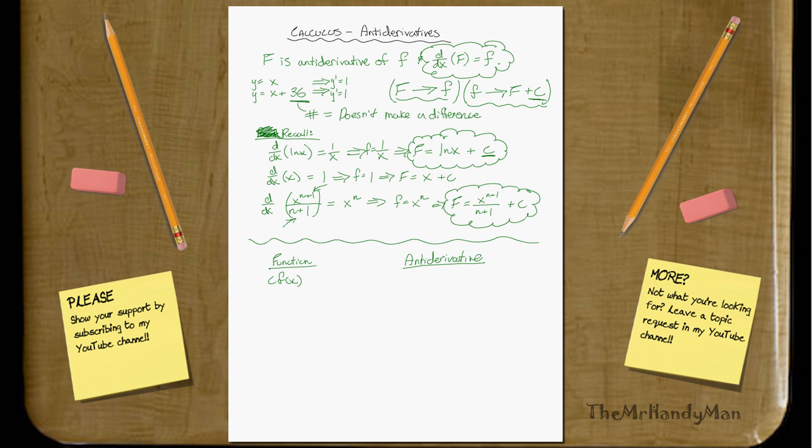You have c f of x. This will still equal c capital F of x. Constants, you just pull them out, do the business with f of x, and then multiply them back in. You have f of x plus g of x. Well, it doesn't really do a whole lot, capital F of x plus capital G of x.